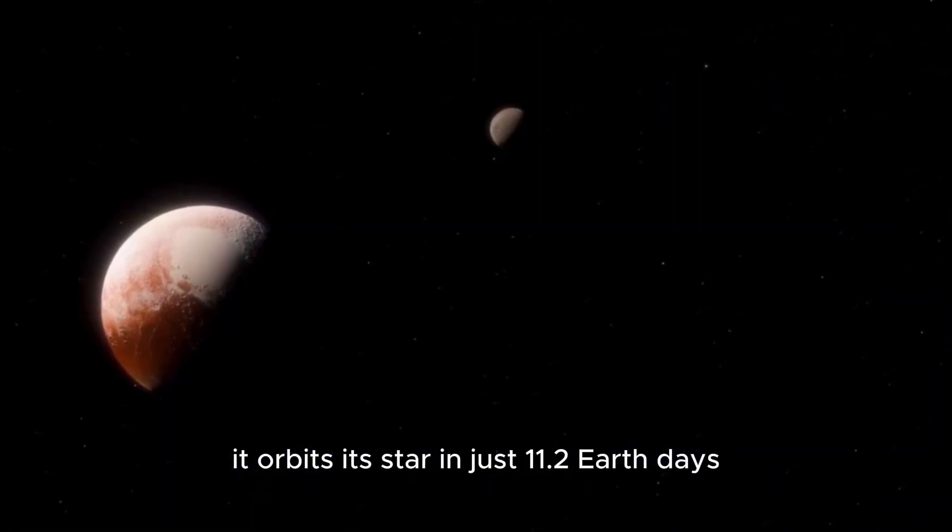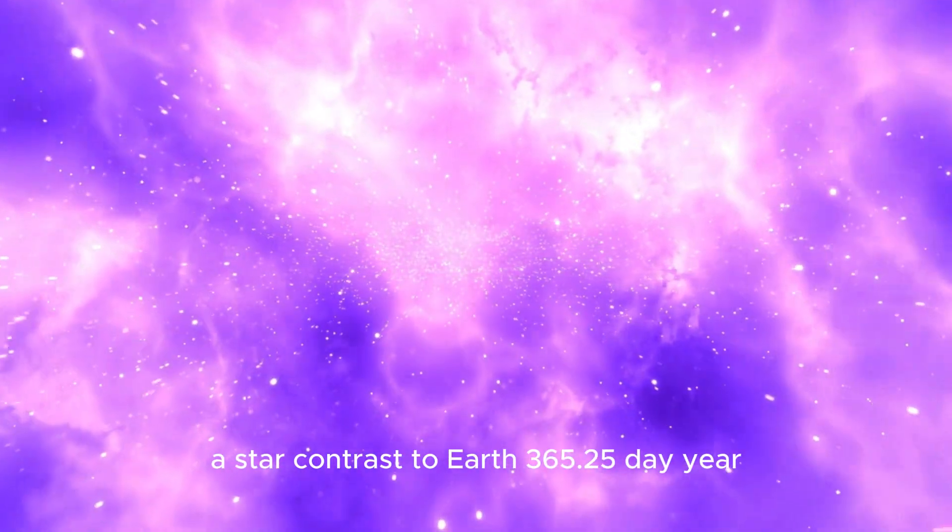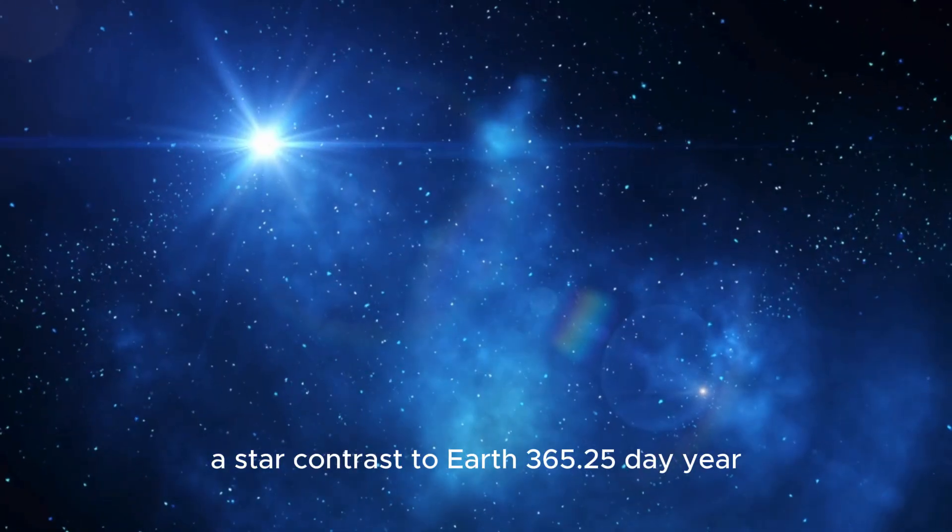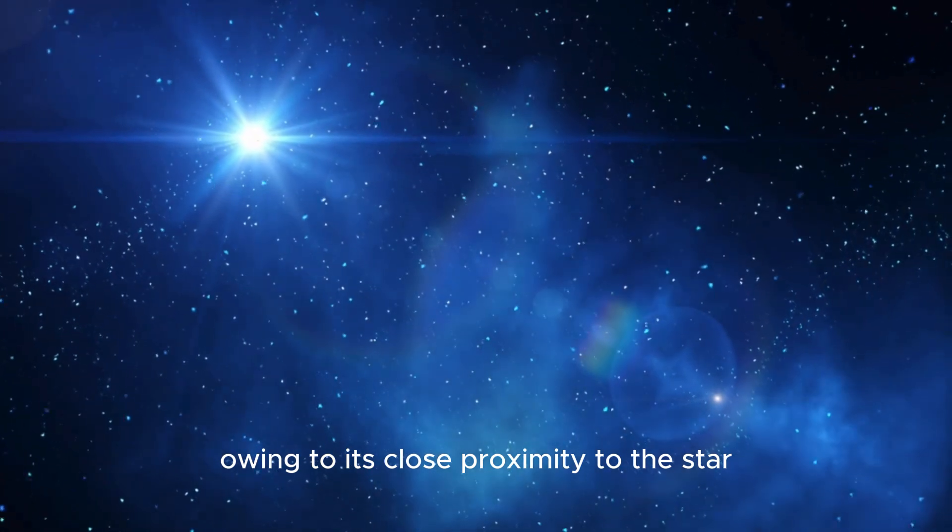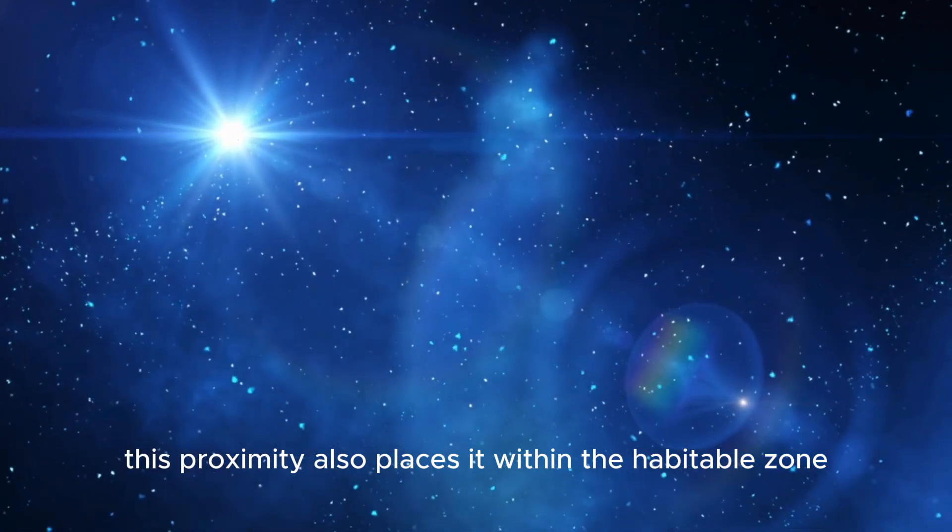It orbits its star in just 11.2 Earth days, a stark contrast to Earth's 365.25-day year, owing to its close proximity to the star. This proximity also places it within the habitable zone, where conditions might support liquid water.